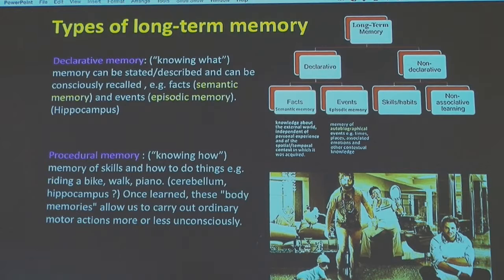There are two types of long-term memory. The first is declarative memory — think of it as 'knowing what' memory — which includes facts and events. Facts are called semantic memory; events are called episodic memory. The second type is procedural memory, or 'knowing how' memory — for instance, how to play piano, sing a song, walk, or drive a car.